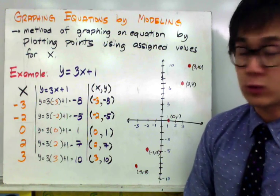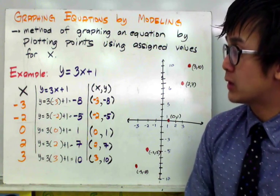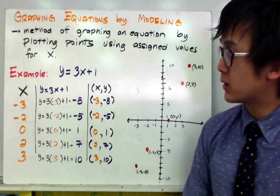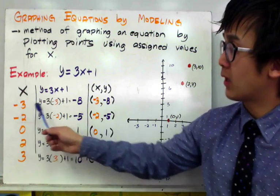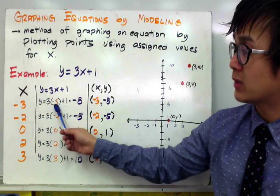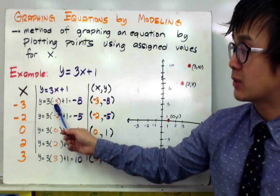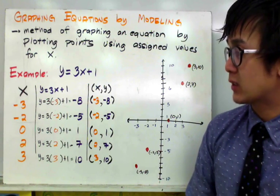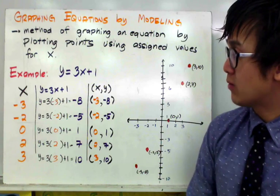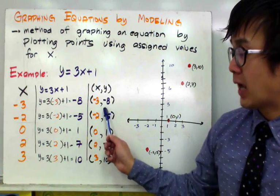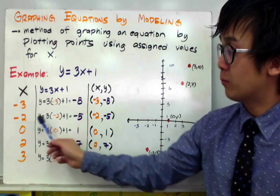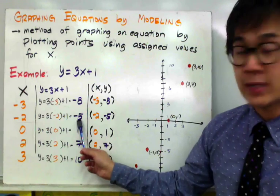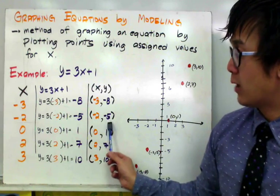Let's start with our first assigned values so that we can find the first point that will help us visualize the graph of our equation. When x is equal to negative 3, plugging it into y equal to 3x plus 1, y is 3 times negative 3 plus 1, which gives you negative 9 plus 1. So y is equal to negative 8, and our first point is negative 3 and negative 8. If x is equal to negative 2, y will be equal to negative 5, so our second point is negative 2 and negative 5.